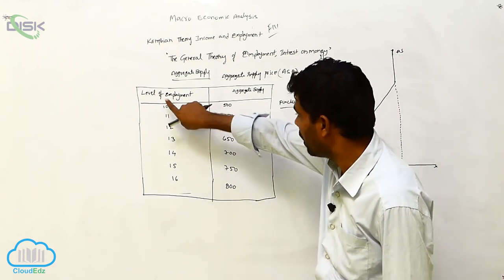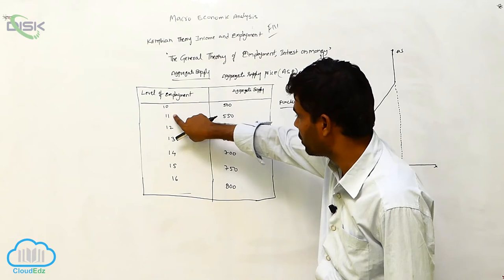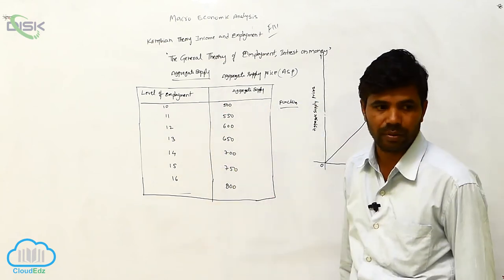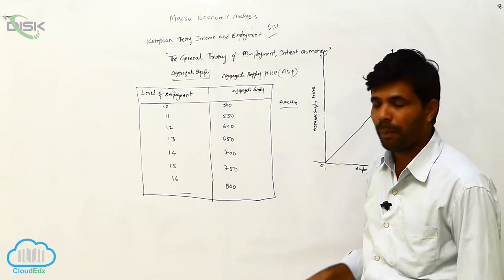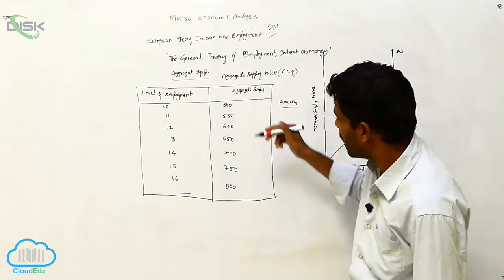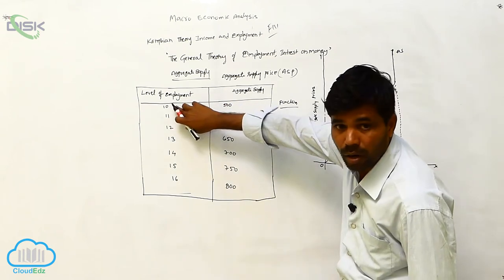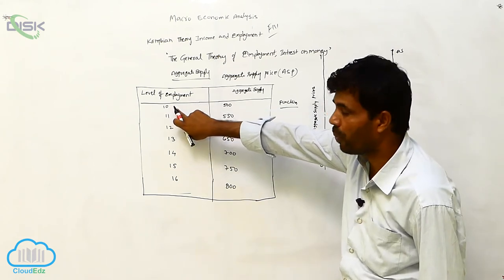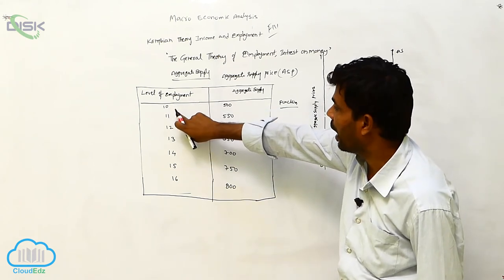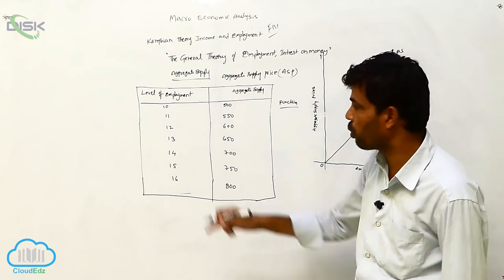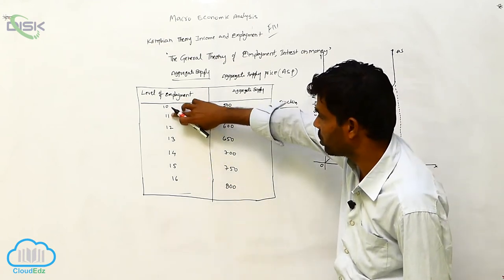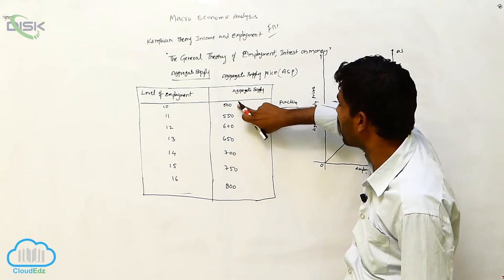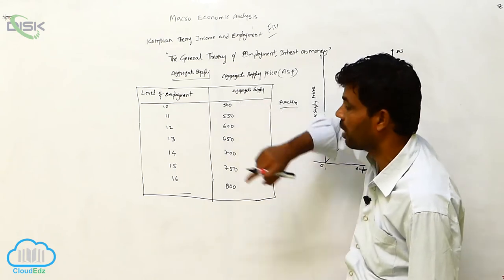When you are taking the level of employment at the next stage, the aggregate supply is 550. When you increase employment — when you move from the starting to the second level — supply also increases from the starting to the second level.